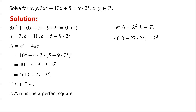If y is less than 0, then 2 to the power of y is not an integer, so 4 times (10 plus 27 times 2 to the power of y) cannot be a perfect square. If y equals 0, then 4 times (10 plus 27 times 2 to the power of y) equals 4 times 37, which is not a perfect square, as 37 is not a perfect square.